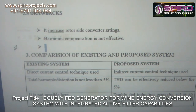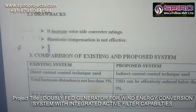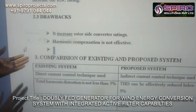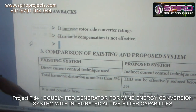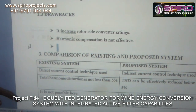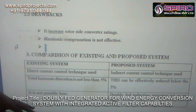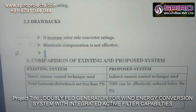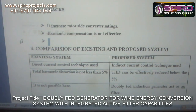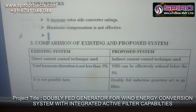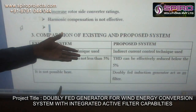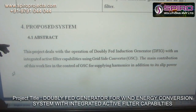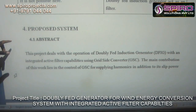In the existing system, the THD — the total harmonic distortion — is very very high. That's why I didn't use the existing system and I am going for the proposed system. The proposed system means doubly fed induction generator, one of the best generators for generating electrical energy. That's why I am using the proposed system — the doubly fed induction generator — which is not possible in the existing system.